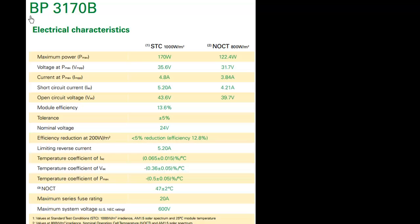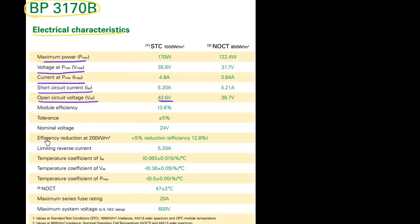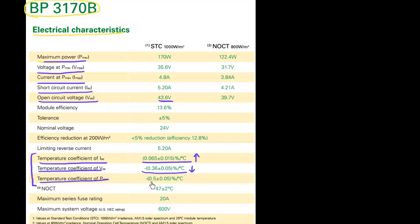For example, this is a specification sheet released by BP Solar. It contains a lot of useful information — maximum power, voltage at maximum power, current at maximum power, ISC, and open circuit voltage. It also reports the temperature dependence we just discussed: the temperature coefficient of ISC shows it increasing by 0.065% per degree centigrade, VOC decreasing as temperature increases, and maximum power — reflective of efficiency — reducing by 0.5% per degree increase.